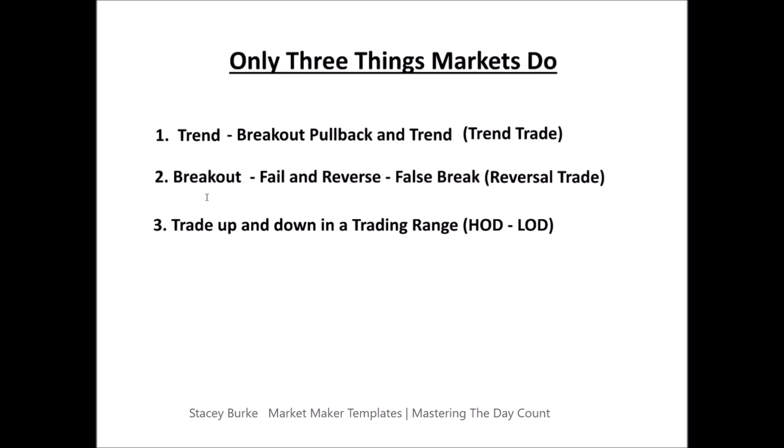We can get a false break reversal — a breakout trade that fails — and then we get a first red day or first green day as the catalyst setup for the trend trade going back to the other side. And then we could just be in a trading range where we could get a London low of day base buy opportunity, or it could be a narrow range day or a consolidated 3-day market waiting on news — just a session trade between the high and low of the day.